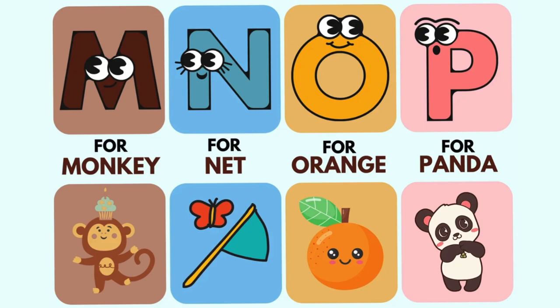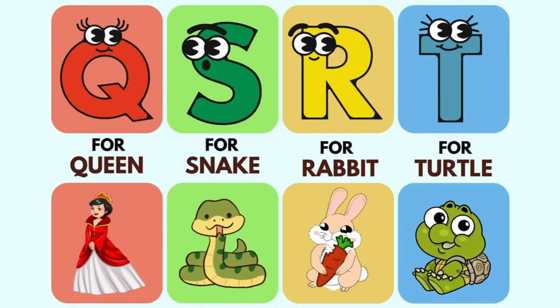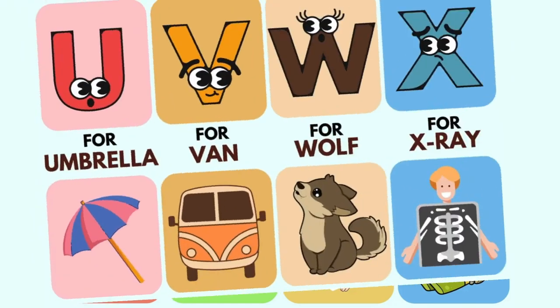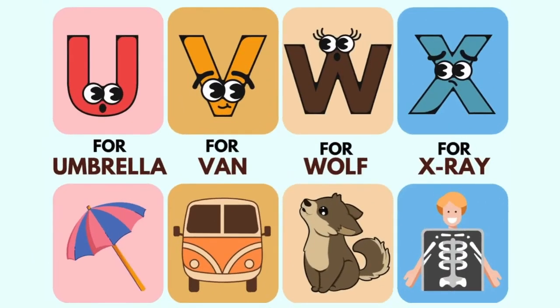P is for panda, Q is for queen, S is for snake, R is for rabbit, T is for turtle, U is for umbrella.